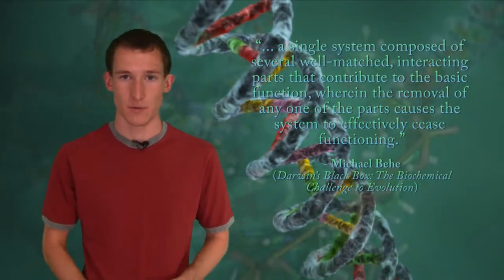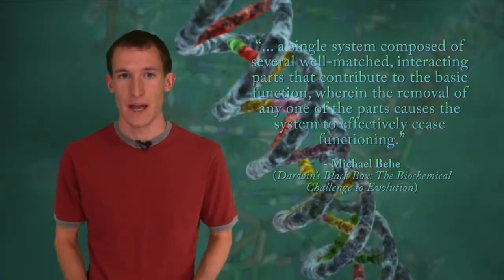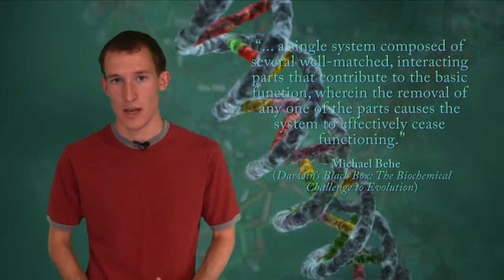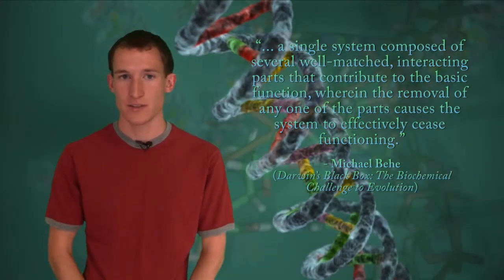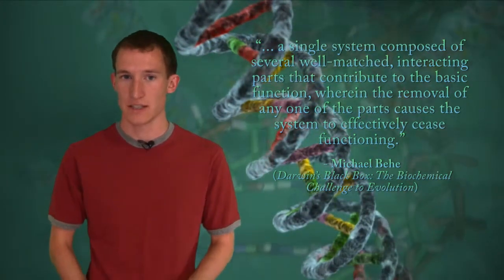In his book, and in subsequent debates and articles, some of which were published in peer-reviewed journals such as Protein Science, Behe explains how decades of research into molecular biology have found molecular machines that would be effectively non-functional if a single component or protein was missing. Such machines, he says, are irreducibly complex, which he defines as a single system composed of several well-matched interacting parts that contribute to the basic function, wherein the removal of any one of the parts causes the system to effectively cease functioning.